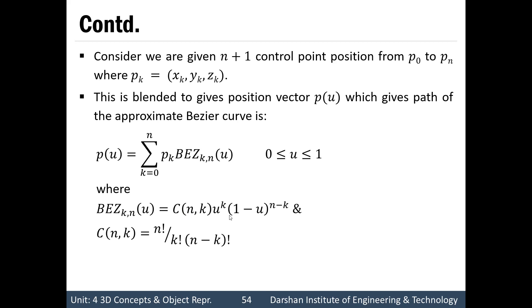The Bezier blending function can be calculated by C(n,k) times u raised to power k times (1 minus u) raised to power (n minus k), where C(n,k) is a combination calculated as n factorial divided by k factorial times (n minus k) factorial.